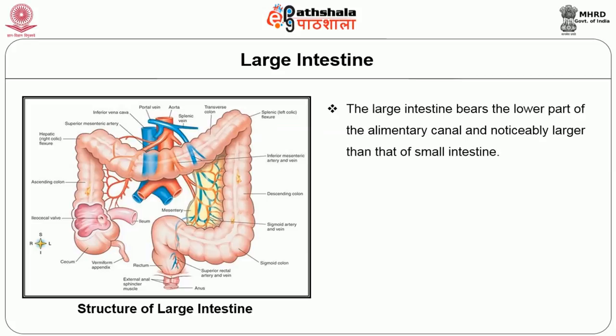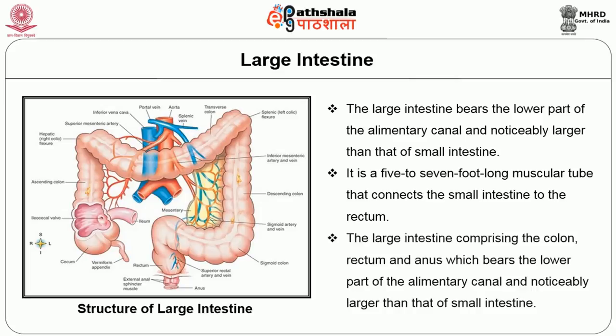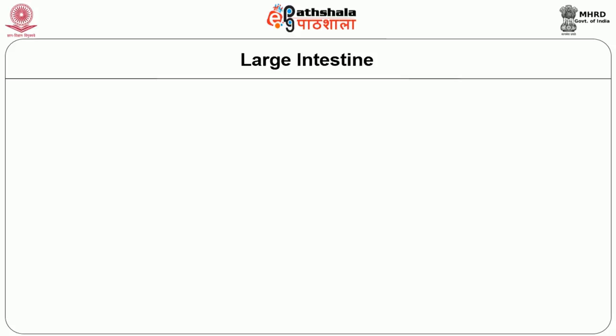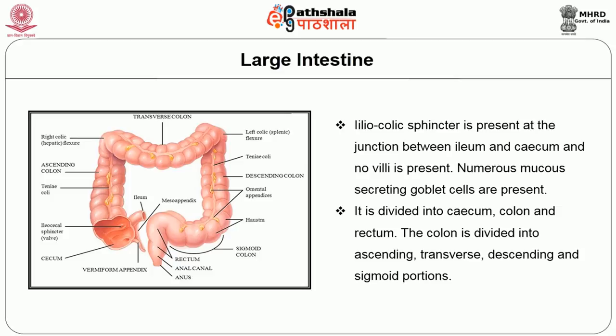The large intestine bears the lowest part of the alimentary canal and is noticeably larger than the small intestine. It is a 5 to 7 foot long muscular tube that connects the small intestine to the rectum. The large intestine comprises the colon, rectum, and anus. There is no ileocolic sphincter present at the junction between the ileum and cecum, and no villi are present. Numerous mucus-secreting goblet cells are present and the large intestine is divided into cecum, colon, and rectum. The colon is divided into ascending, transverse, descending, and sigmoid portions.